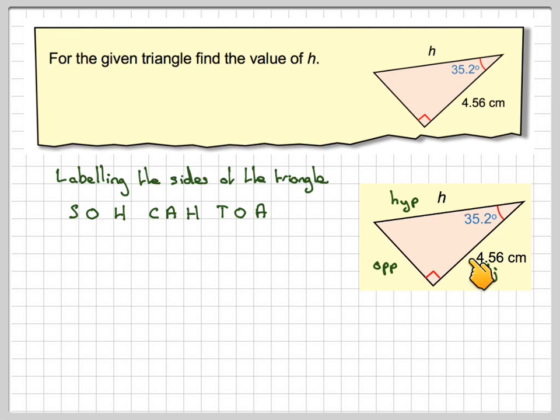Now, we are given adjacent, and we want to find the hypotenuse, and we have the angle. So adjacent, we want to find the hypotenuse, we have the angle. It's going to be this one, so it's cos.